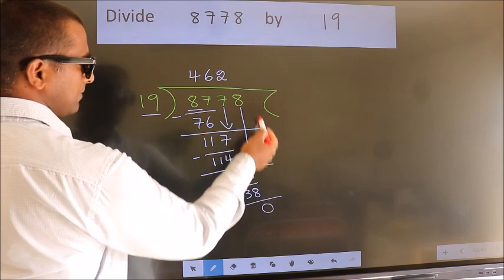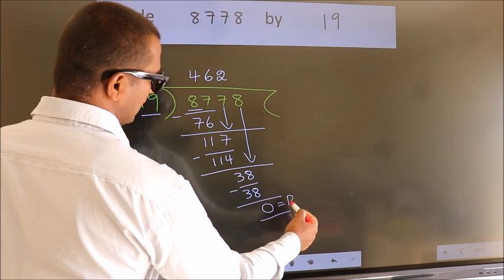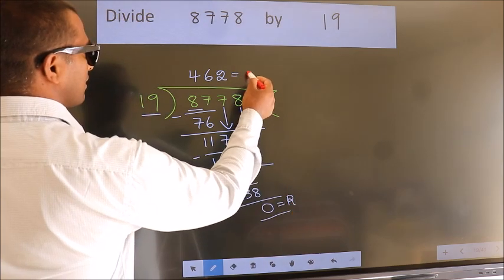No more numbers to bring down, so we stop here. This is our remainder. This is our quotient.